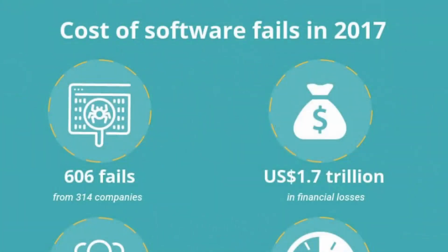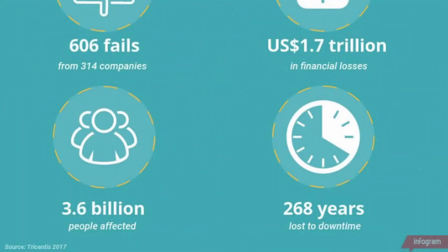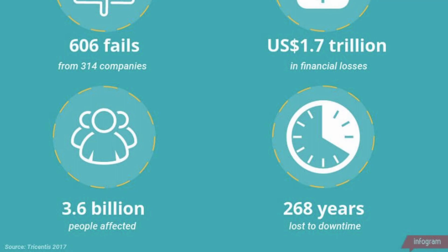The 2003 study from the Department of Commerce showed about $59.5 billion annually. However, in 2017, Tricentis from Tricentis.com did a study and found that software failures cost the economy $1.7 trillion — up from 2016, where the cost was $1.1 trillion. A lot of money is attributed to software bugs. That study was done over 314 companies, and those bugs affected 3.6 billion people. The relative downtime experienced by these 3.6 billion people came out to the equivalent of 268 years of lost downtime. That's huge — all from software bugs.